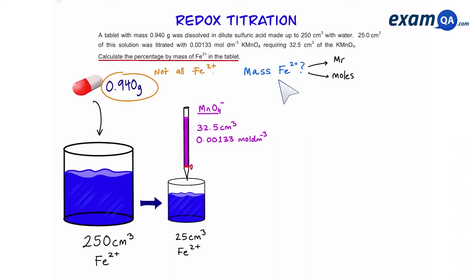Well, to find mass we need to know MR and moles. We can work out the MR using the periodic table. However, they haven't told us the moles of iron. To work out the moles of iron, we can start by working out the moles of manganate.